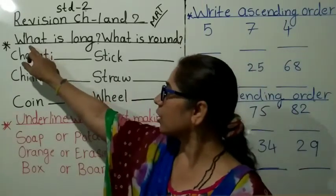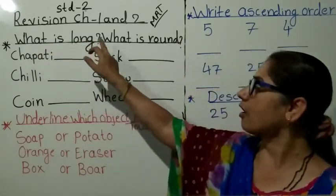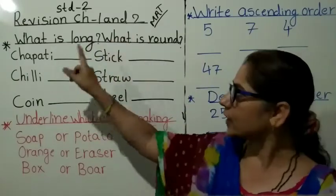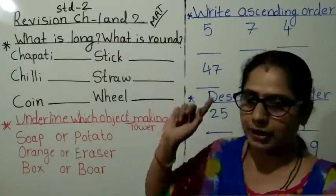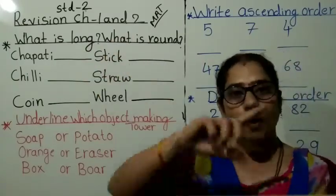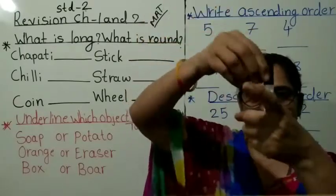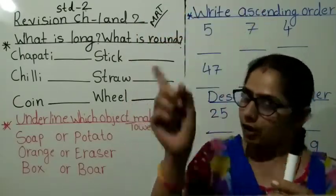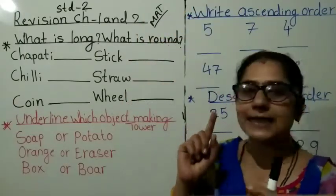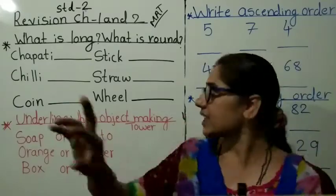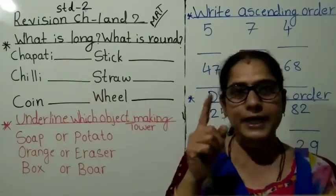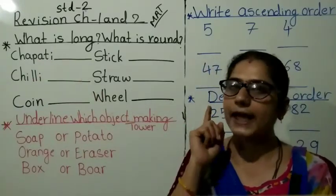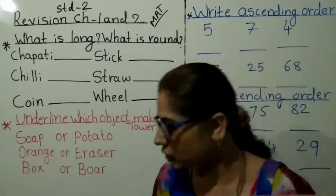One, the first here. What is long and long? What is round? What is long? What is round? Means, long means ऐसे. Long. What is round? Means, आप समझना चाहिए. Round के, क्या चीज़े round होता है? क्या चीज़े long होता है? Understood?